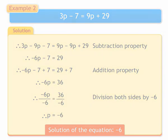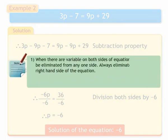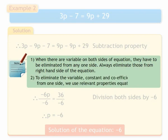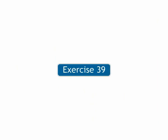Note the following: 1. When there are variables on both sides of an equation, they have to be eliminated from any one side. Always eliminate those from the right-hand side of the equation. To eliminate the variable, constant and coefficient of variable from one side, we use relevant properties of the equation. Now, let us solve the sums from exercise 39.